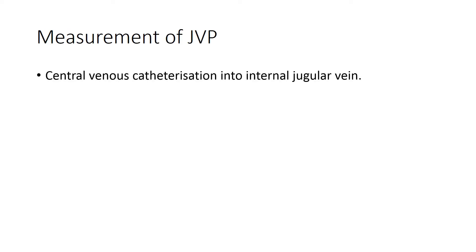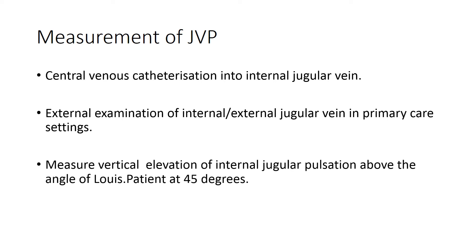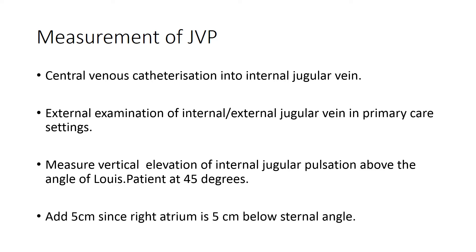How is JVP measured? You can use a central venous catheter to measure the JVP, or you can measure on clinical examination by positioning the patient at 45 degrees and looking for the position of the internal jugular vein. Then measure the vertical elevation of the internal jugular vein above the angle of Louis. Whatever value you get, for example 3 cm, you add 5 cm to get the actual value above the right atrium, since the angle of Louis is approximately 5 cm above the right atrium.